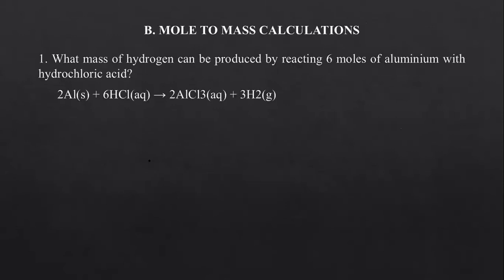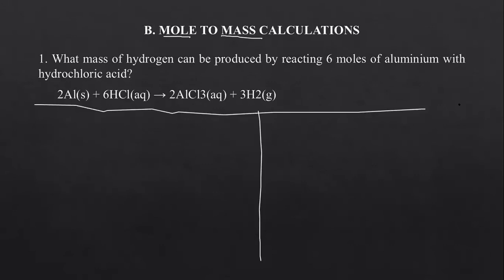Now we deal with mole-to-mass calculations. We started with mole-to-mole; now we are converting from moles to mass. They will give you the number of moles of something so you can find the mass. The sample question says: what mass of hydrogen can be produced by reacting 6 moles of aluminium with hydrochloric acid? They've already given us the equation, but don't take it for granted — not always will they provide one.